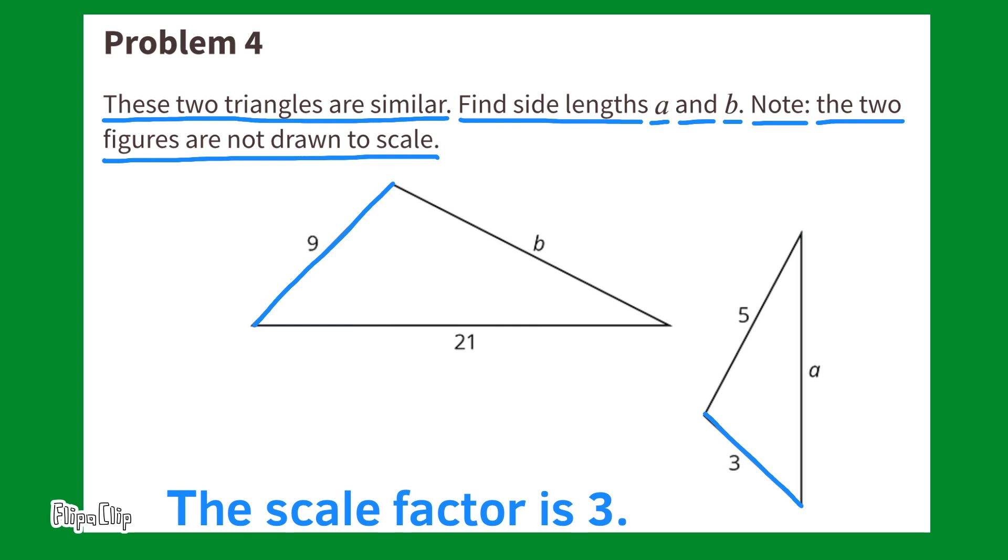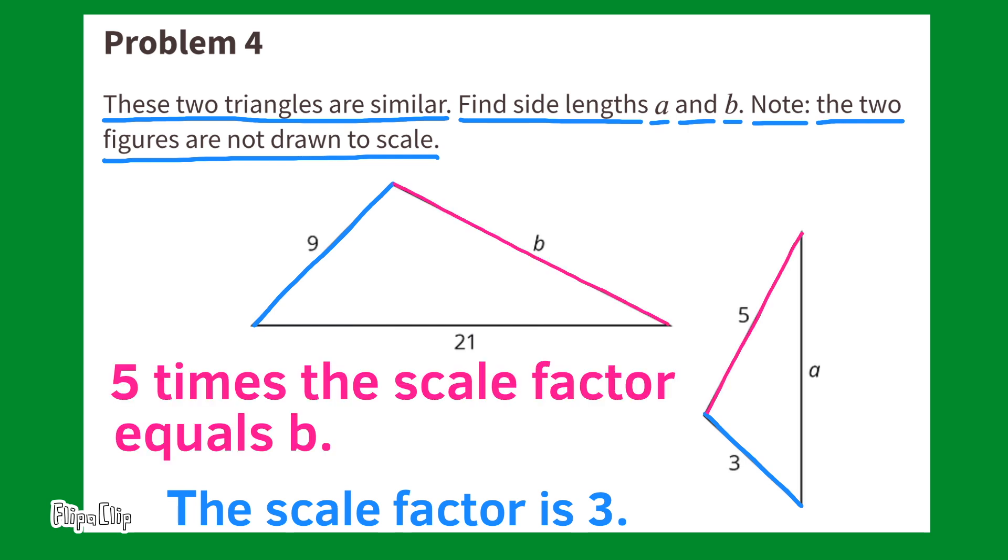Now that we know that the scale factor is three, let's apply that to the other information that they've provided us. For this side length five, five times the scale factor equals B. So plug in three for the scale factor, and you have five times three equals 15. So the missing side length for B is 15.